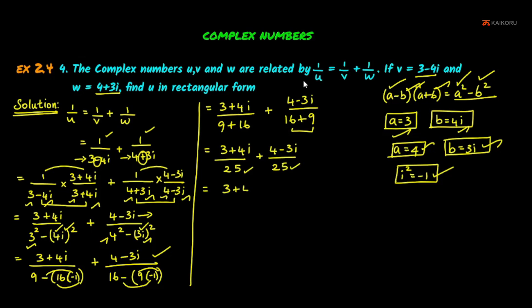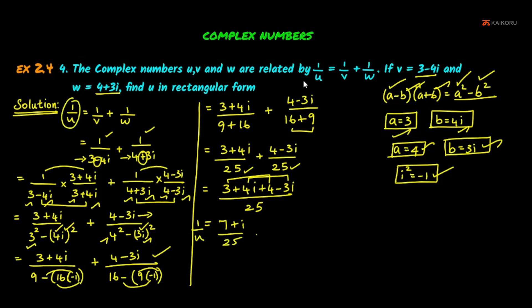Since both denominators are the same, we combine: (3 plus 4i plus 4 minus 3i) divided by 25. Adding the real parts: 3 plus 4 equals 7. Adding the imaginary parts: 4i minus 3i equals i. So 1/U equals (7 plus i) divided by 25.